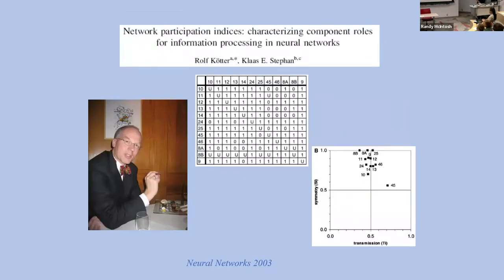That led a number of individuals, including my close colleague Rolf Kötter, to take a deeper dive — to actually look at more of the information, things like tract connectivity. He and Claus Hilgetag looked at things like network participation indices, which was a way of characterizing how important different areas were based solely on anatomical connections — to understand the capacity for these systems to integrate information, and which nodes were more important in terms of things like the symmetry of connections and the capacity to transmit information in a directed manner.